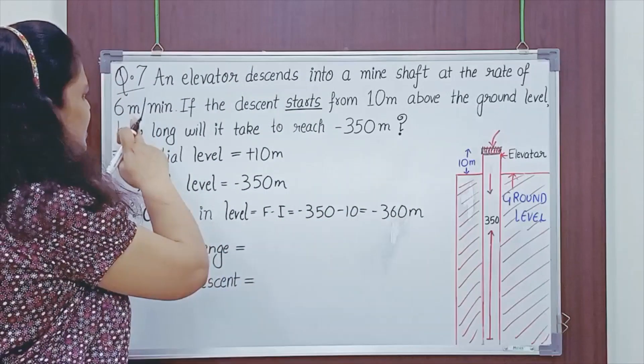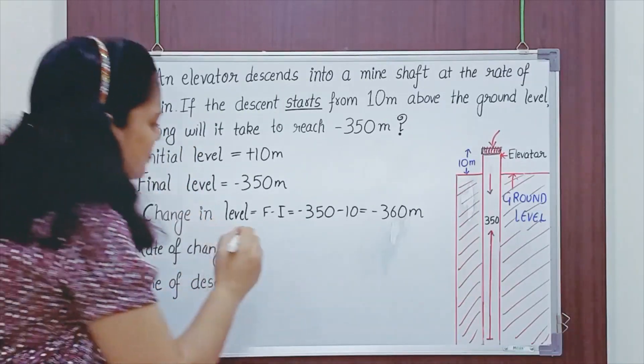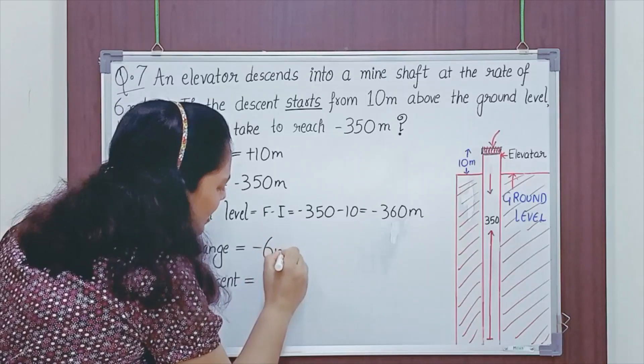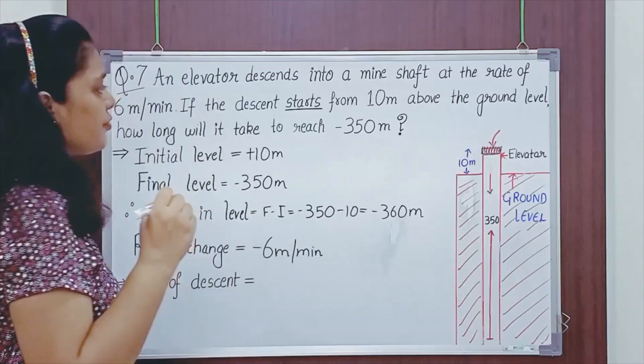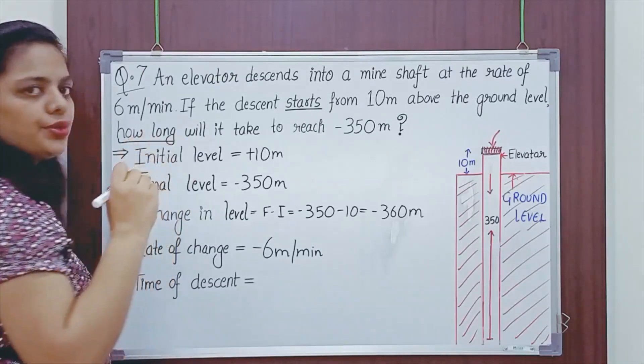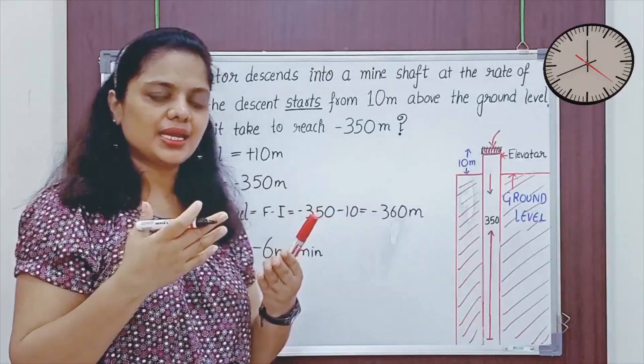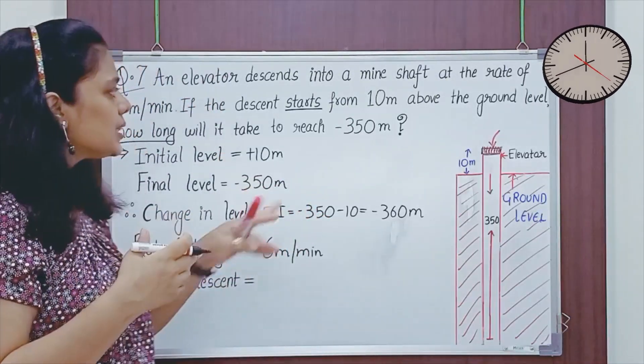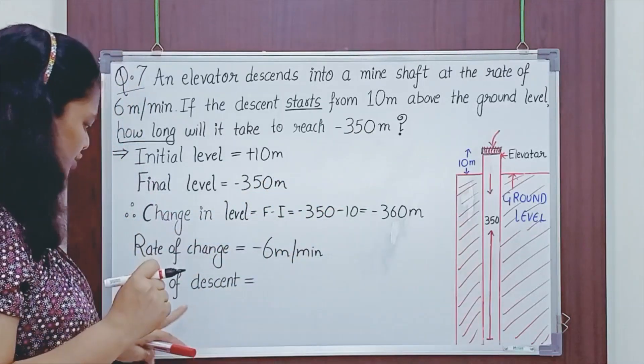Now, what is the rate of change? 6 meters per minute. Since descent is happening, I will represent it by minus. So, it is minus 6 meters per minute. Since we have to calculate the time of descent, it is saying how long will it take to reach minus 350 meters. How long means we have to tell the time.